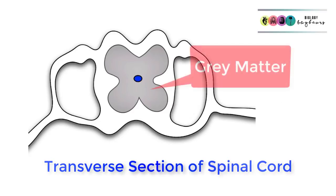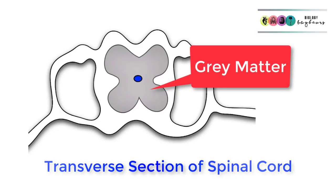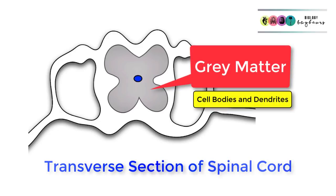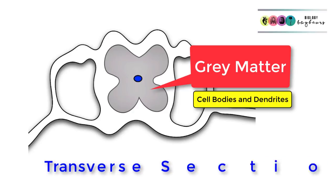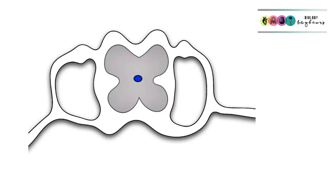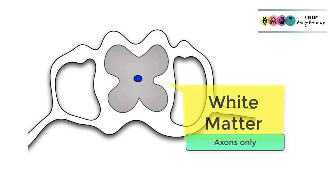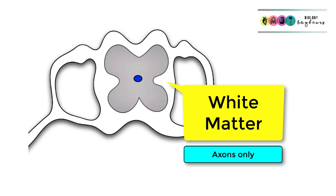The grey matter is arranged in an H-shape or butterfly shape and contains cell bodies and dendrites. Surrounding the grey matter is white matter, which is made up of axons only. Axons are usually covered in myelin sheaths, which contain a lot of fat — and that's the reason for the white appearance.